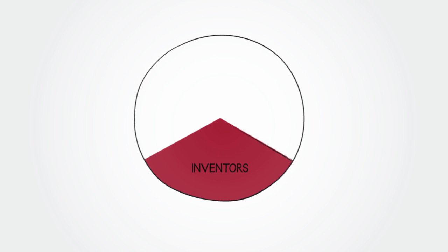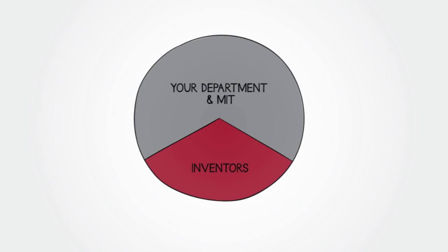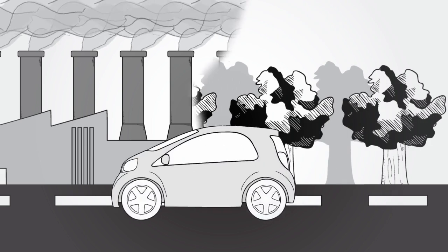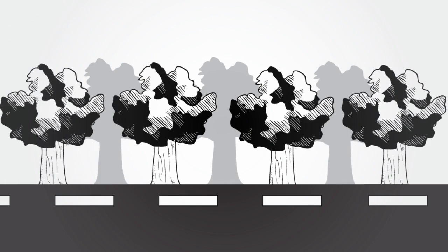And if your invention generates money, one third of the net revenue goes directly to the inventors, while the rest goes to your department and to support research and education at MIT. That way, society benefits from your invention, and so do you, and so does the MIT community.